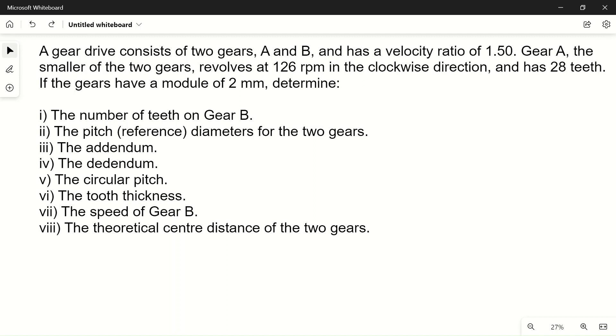Let's read the problem. A gear drive consists of two gears A and B. Let's draw together while reading the problem. This is gear A and this is gear B, giving a velocity ratio of 1.50.